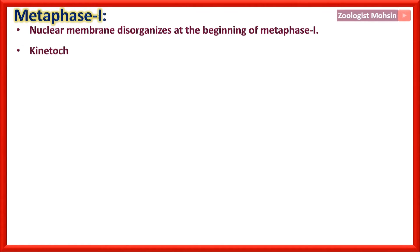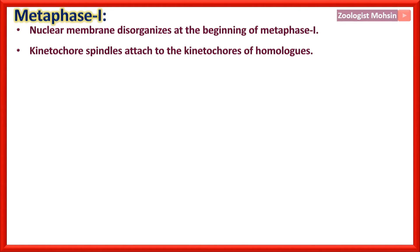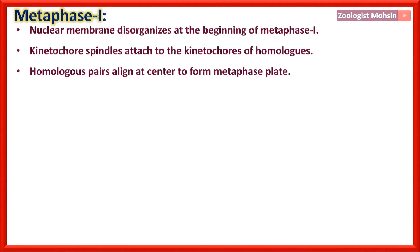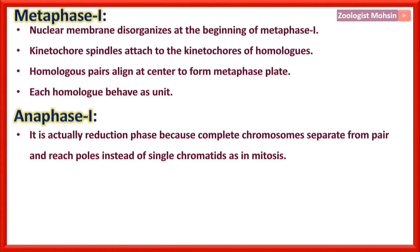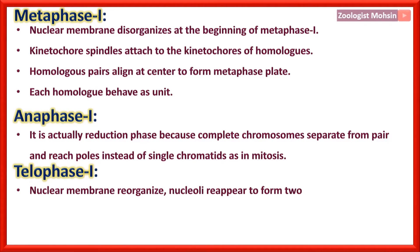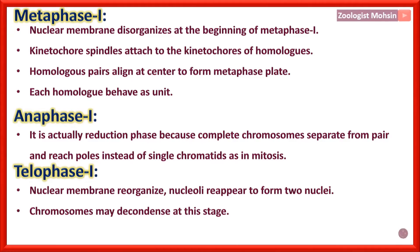Metaphase 1: the nuclear membrane disorganizes at the beginning. Kinetochore spindles attach to the kinetochores of homologous chromosomes. Homologous pairs align at the center to form the metaphase plate — the word 'pair' is important, and each homolog behaves as a unit. Anaphase 1 is the actual reduction phase: complete chromosomes separate from the pair and reach the poles, instead of single chromatids as in mitosis. Telophase 1: nuclear membrane reorganizes, nucleoli reappear to form two nuclei, and chromosomes may decondense but that is not compulsory.